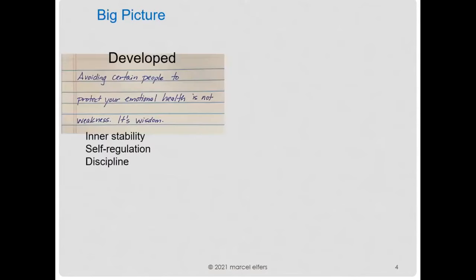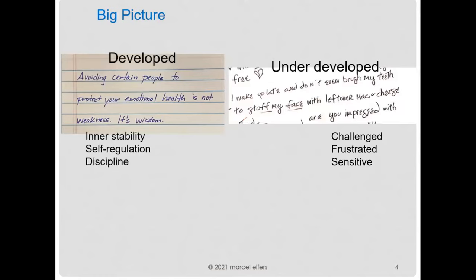Here we see a developed writing that suggests inner stability, self-regulation, and discipline. This next sample is underdeveloped — there are some challenges in the writing. We see that self-regulation is a little bit off; it's a little confused and frustration comes to the foreground. There are some odd letter structures suggesting anxiety.